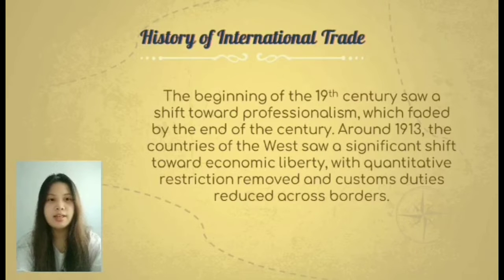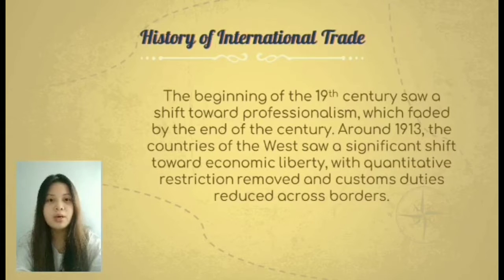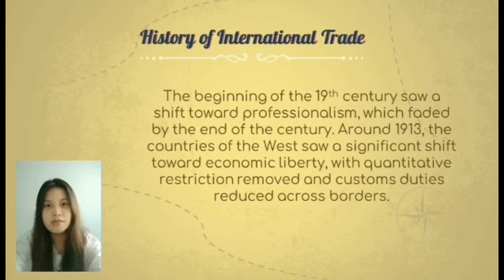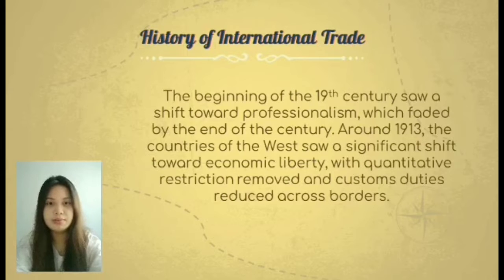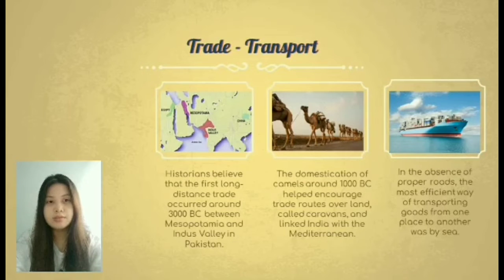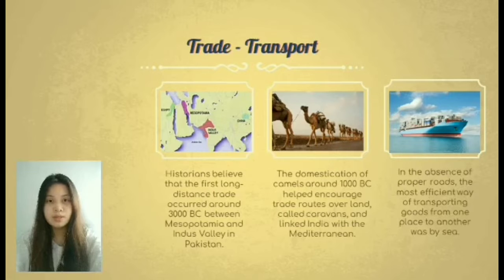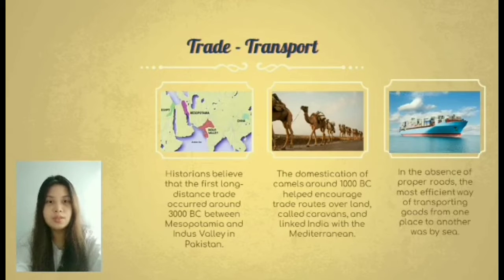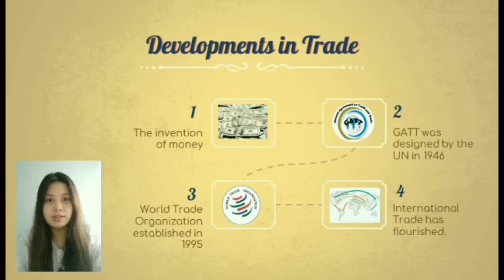The beginning of the 19th century saw a shift towards liberalism, which faded by the end of the century. Around 1913, western countries saw a significant shift toward economic liberty with restrictions and customs duties reduced, making it easy to establish businesses and find employment. The first long-distance trade happened between Mesopotamia and the Indus Valley in Pakistan. Canals helped encourage land-based trade routes, and due to a lack of proper roads, goods were also transported by sea.